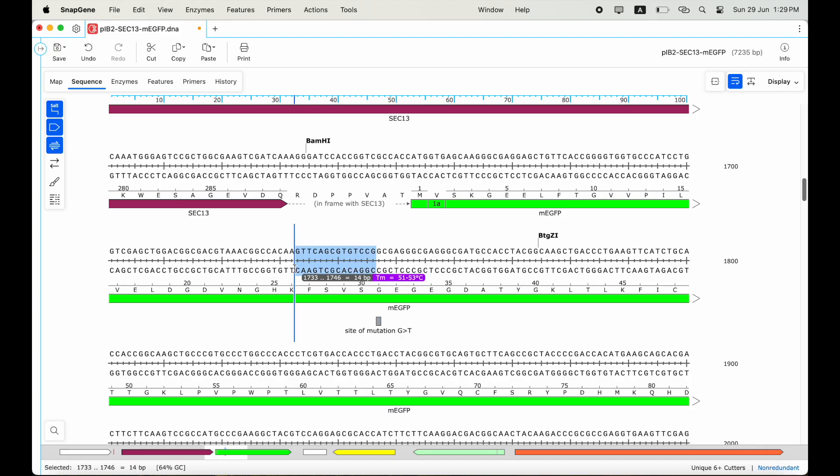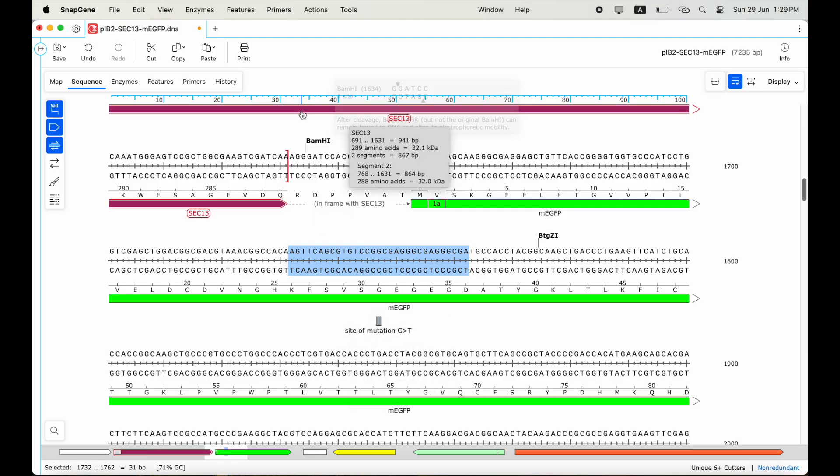I will then go ahead to design my primers. It is recommended to design primers between 25 and 45 base pairs long, so I will select 15 bases on either side of my desired mutation. Note, I will ensure that the mutation is placed directly in the middle of the primer.